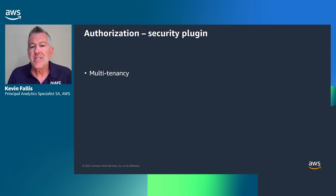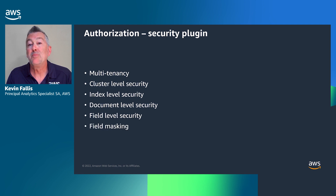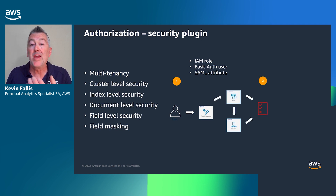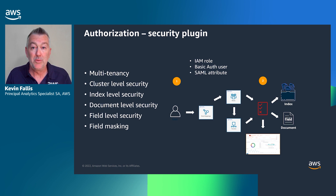From an authorization perspective, we leverage the security plugin discussed earlier. It supports multi-tenancy, cluster-level security, index-level security, document-level security, field-level security, and field masking. The way this works is that you have an IAM role, a basic auth user, or SAML attributes that you provide for role mappings. These role mappings are associated with a role that gives you the granular access of your choice — at the index, field, document level, or with masking. When you access that data through your client, OpenSearch Dashboards, or Kibana, you will see only the data you've authorized those users to access.